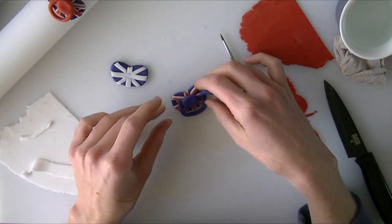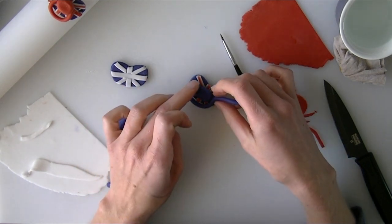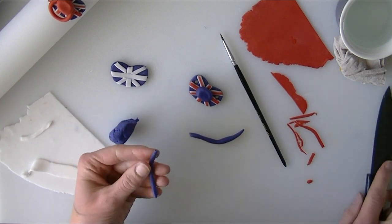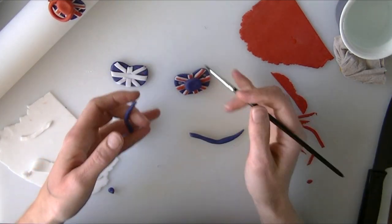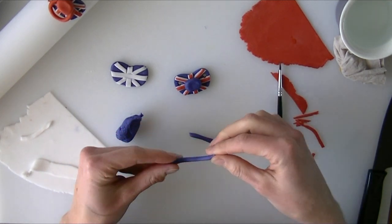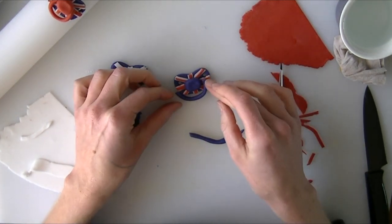I'm going to work out how long it wants to come. I'm going to have it so it just comes just below the dummy. I'm just going to put a little bit of water then on either side of my blue bit so that I can stick that down. Bringing it up and around both sides.